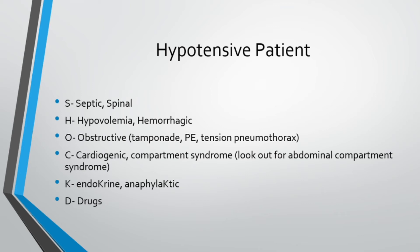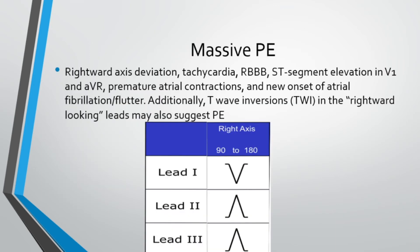Now let's get into PE. On a 12-lead, forget about S1Q3T3 — it's not very sensitive and only occurs in about 20% of PE patients. To diagnose a PE you need a thorough history: has the patient been traveling on a long flight or driving? Are they a trucker? Are they not taking blood thinners while on AFib? Has your female patient been taking birth control? Then do your 12-lead and look for tachycardia, which shows up in almost every single PE.